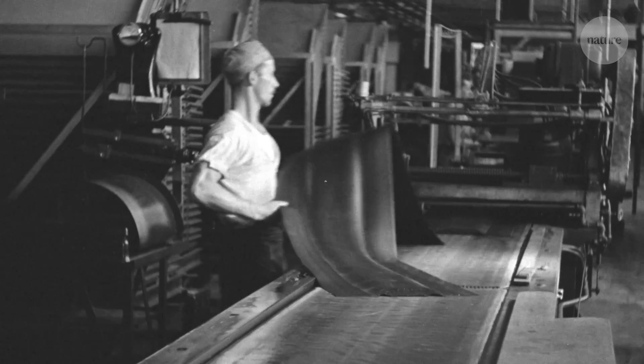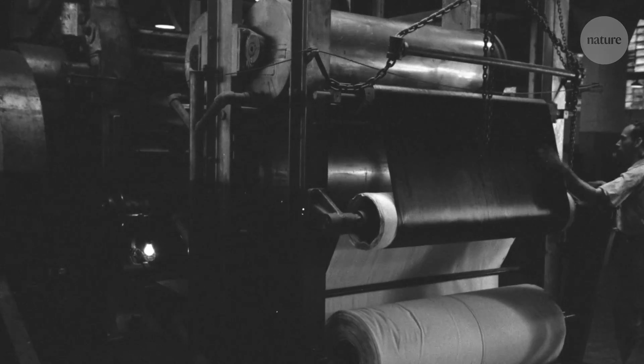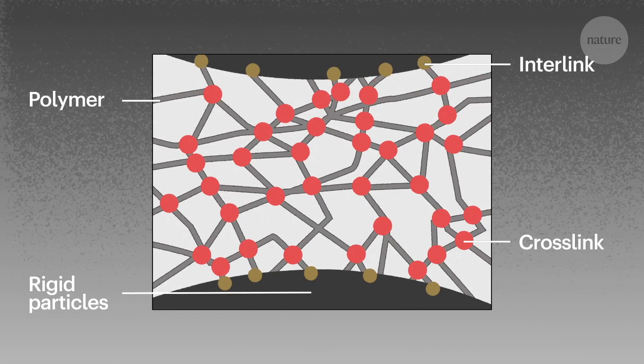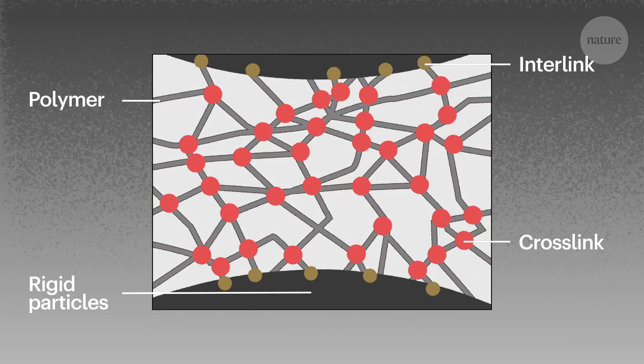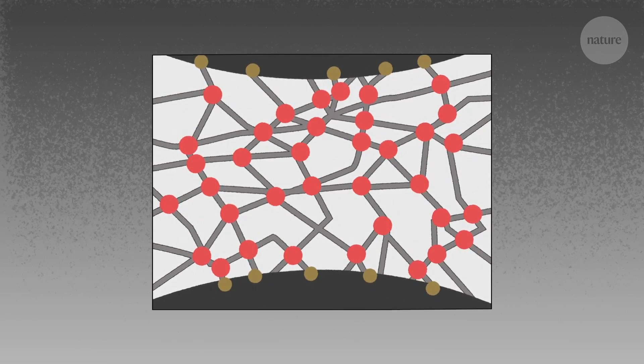Traditional reinforced rubbers, or particle-reinforced elastomers as they are known, are made up of networks of rigid particles and cross-linked polymers. The cross-links effectively weld the polymer strands together. This makes the rubber stiffer, but also more brittle.